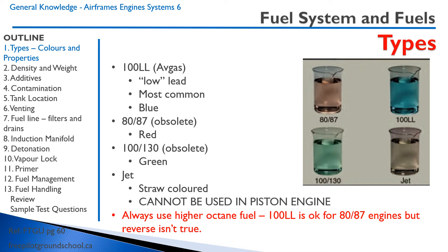Jet fuel is straw colored, and it absolutely cannot be used in a piston engine. Jet fuel is pretty much the same as diesel fuel or kerosene. The general rule is you can always use a higher octane fuel — you can use 100LL fuel for an engine designed for 80, 87, but you can't go the reverse. If an engine is designed for 100LL fuel, you can't put 80, 87 fuel in it.